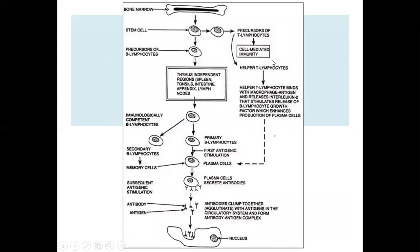Bone marrow stem cells are precursors of both T lymphocytes and B lymphocytes. B lymphocytes grow in thymus-independent regions such as tonsils, intestine, appendix, and lymph nodes. These immunocompetent B lymphocytes ultimately mature into secondary B lymphocytes and plasma cells. When antigen is present, antibodies are generated from plasma cells and secreted into the humoral system of multicellular organisms.